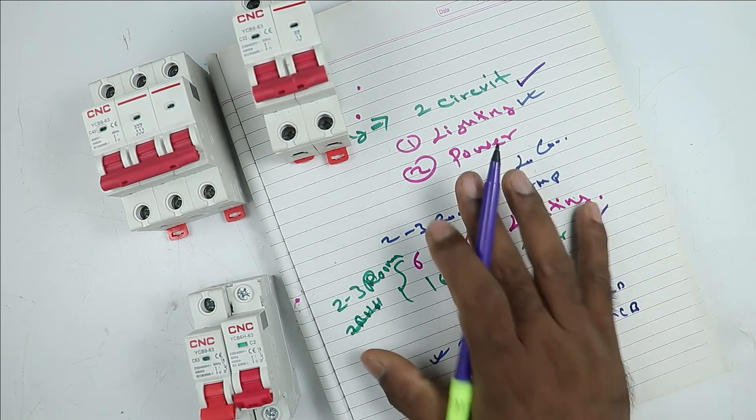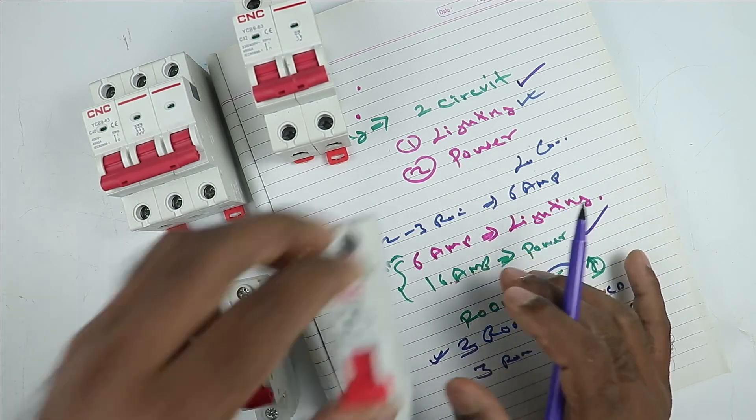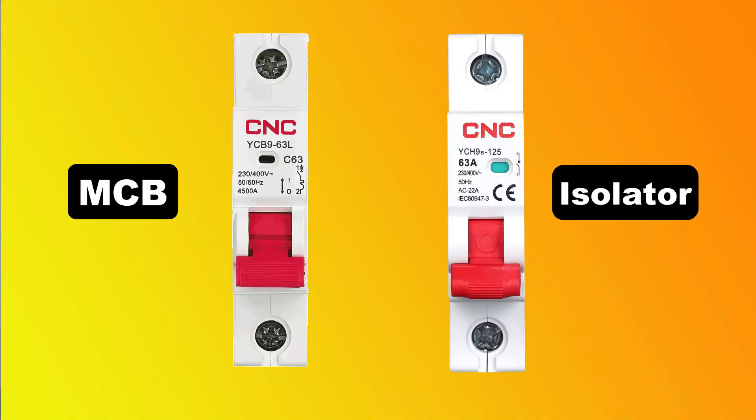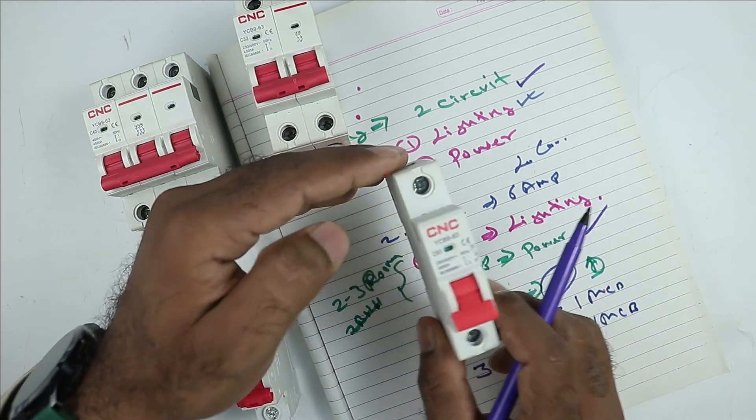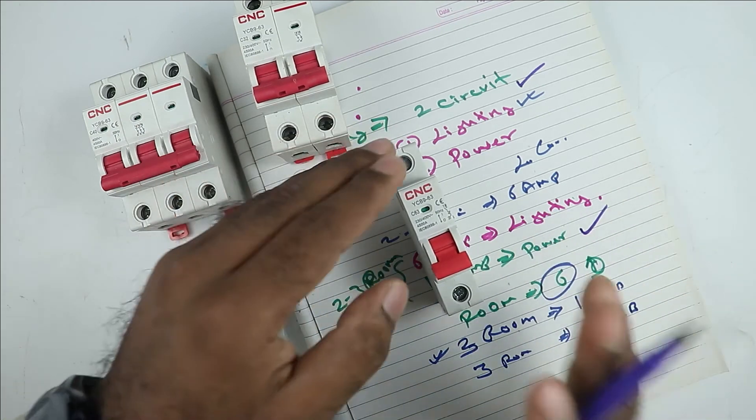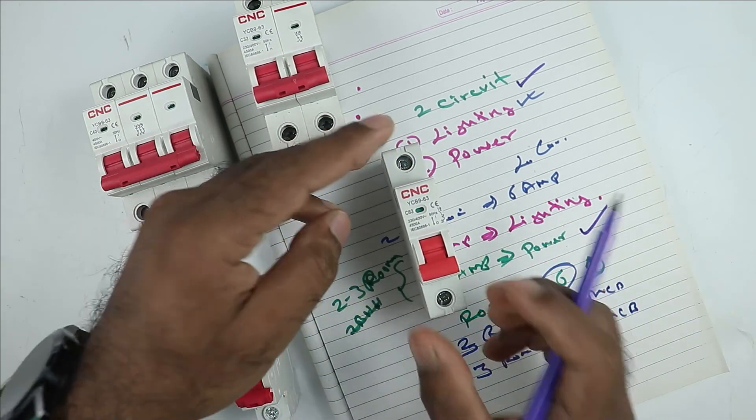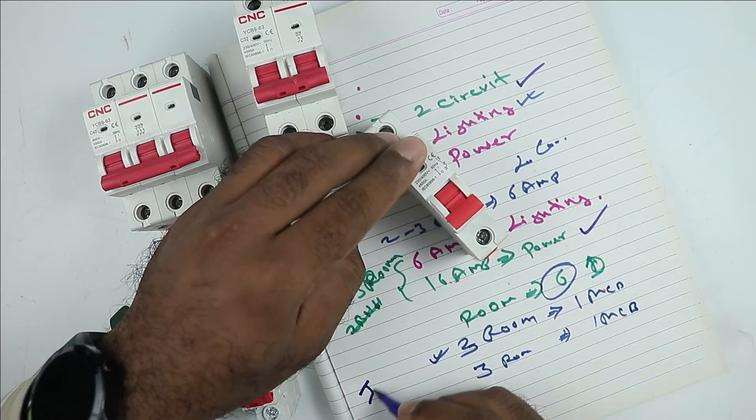Apart from this, if you go to purchase MCB in market, then same as MCB, you will find an isolator also. If you don't have the knowledge of electrical, then you will never come to know that the MCB which you bought from market is not MCB, it is isolator.